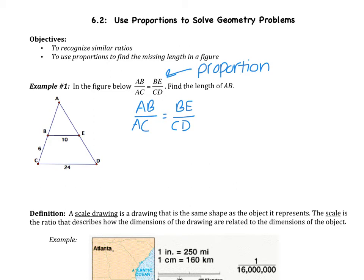Now, all you have to do is plug in what you know. Well, AB I actually don't know that, let's call it x, over AC. AC is this whole portion right here. It is not 6. Let's be aware that it's x plus 6. That's a very common mistake, so please watch out for that. Would equal BE is 10, and CD is 24.